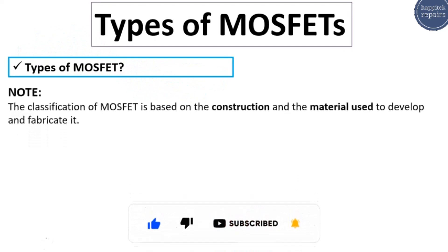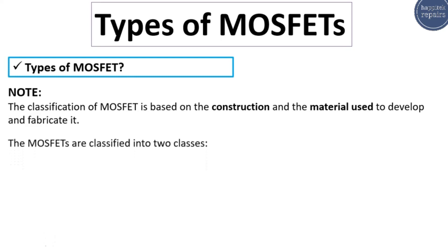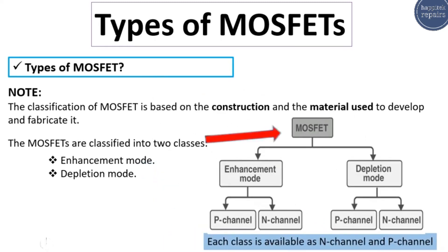The classification of MOSFETs is based on the construction and the material used to fabricate it. MOSFETs are classified into two classes: enhancement mode and depletion mode. As you can see in this block diagram, MOSFETs are divided into these two classes, and each class is available as n-channel and p-channel. We're going to see all about n-channel and p-channel MOSFETs and the difference between them.